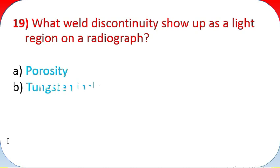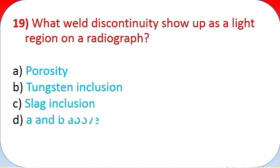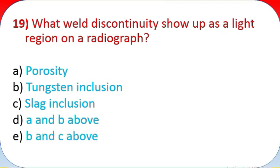Question 19: What weld discontinuity shows up as a light region on a radiograph? A - porosity, B - tungsten inclusion, C - slag inclusion, D - A and B above, E - B and C above.